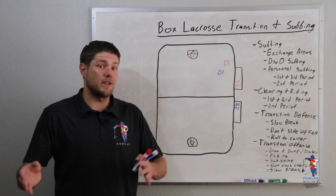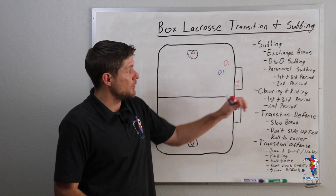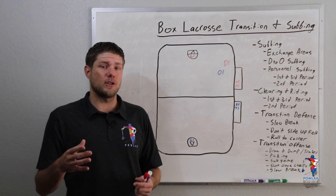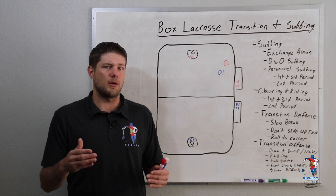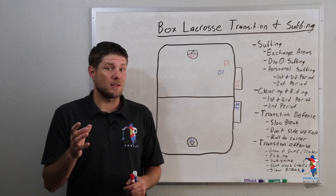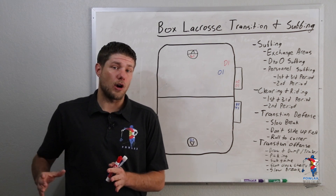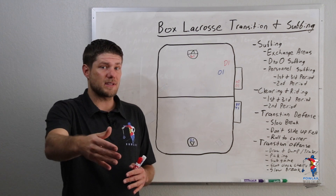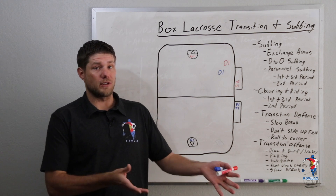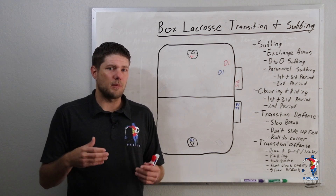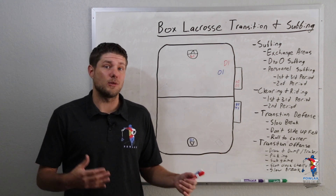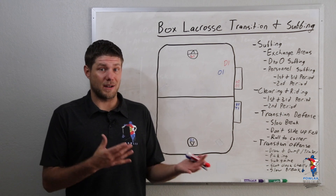Once our players have a good understanding of the exchange areas, we're going to go through the two separate types of subbing: defense-to-offense subbing and personnel subbing. Defense-to-offense means we're only going to sub as we're moving and clearing the ball from defense to offense. Personnel subbing is a little different — we're going to have all of our offensive personnel go on the floor when we go to offense, and as the ball comes to our defensive end, they sub out and we get all of our defensive personnel on.